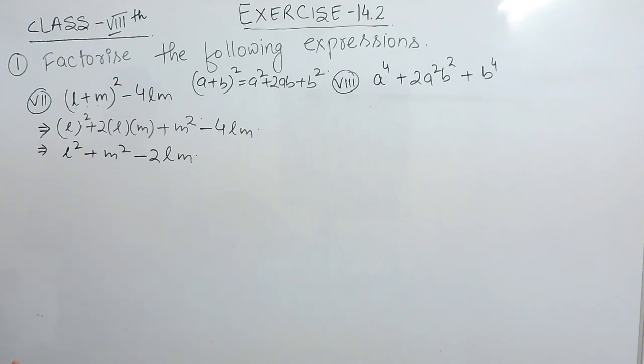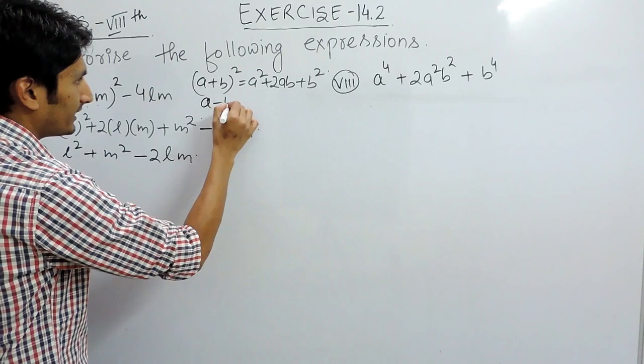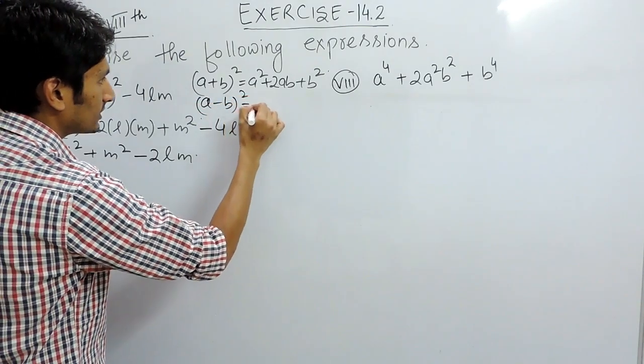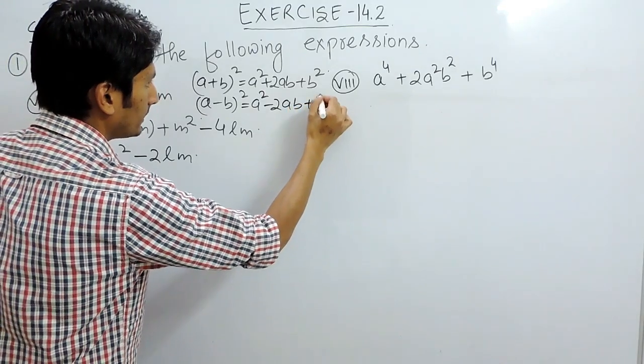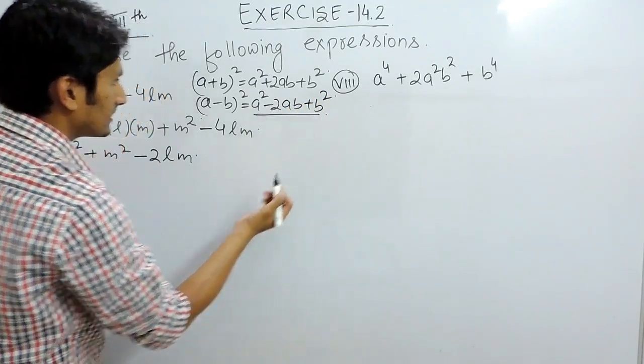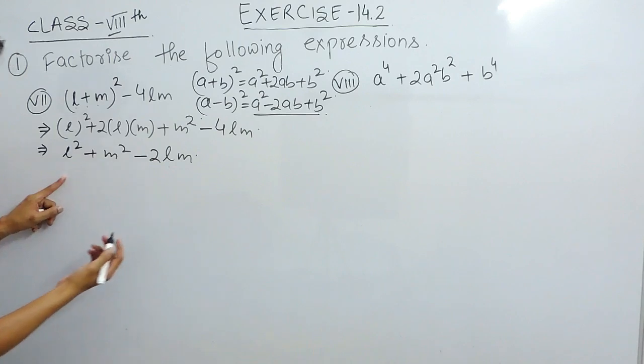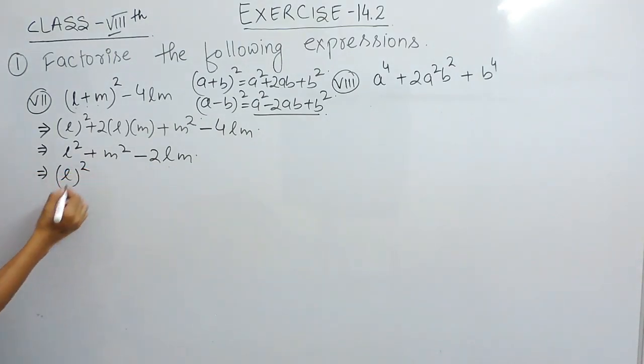Now, this value can be factorized using the formula which is a minus b whole square is basically equals to a square minus 2ab plus b square. And this is same as this. Now, let's convert.